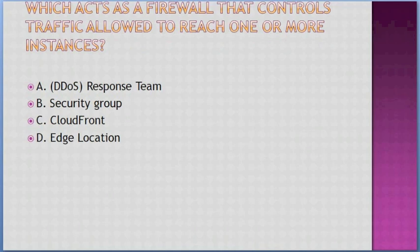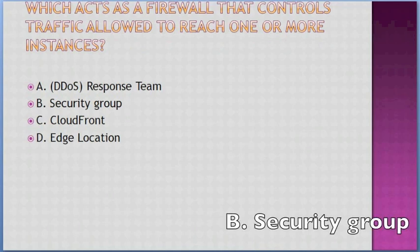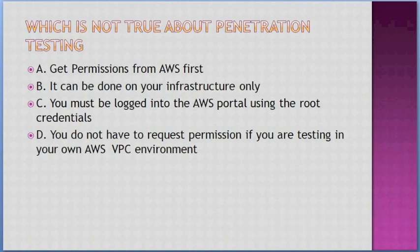Which is not a feature of AWS WAF? Options include the AWS DDoS response team, security group, CloudFront, and edge location. Answer: B — security group.